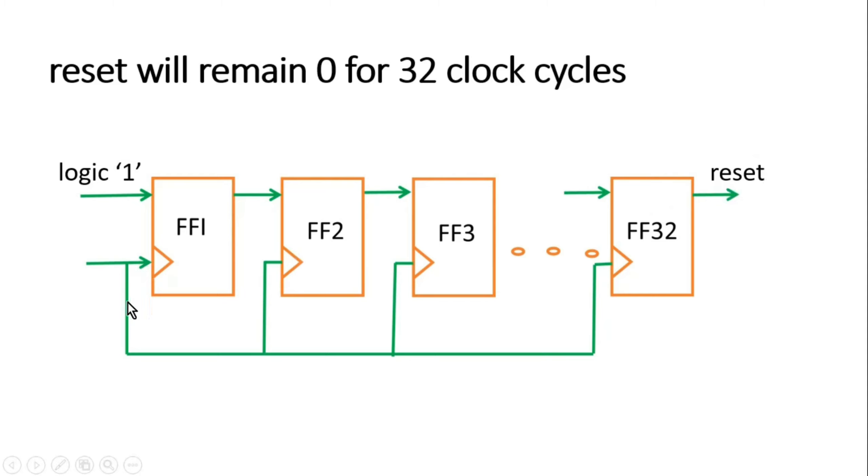As soon as we apply this clock, on the first positive or negative edge of the clock, as per the flip-flop nature, the input will be passed to the output of the flip-flop. This one will be passed to the output of flip-flop one. In the second clock cycle, this one will reach the output of the second flip-flop.